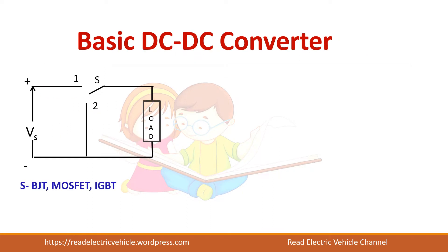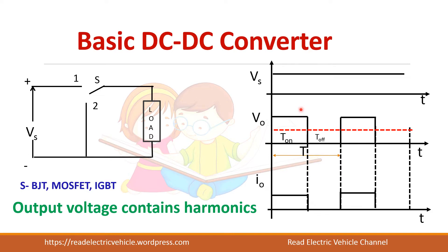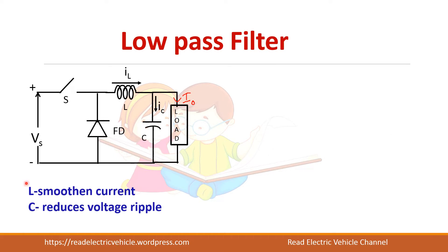This is a basic DC-DC converter. When this switch is connected to position 1, output voltage equals supply voltage, and when connected to position 2, output voltage is 0. In this case the ripple is very high — this point is Vs and this is 0 — so you cannot give this type of voltage to a practical circuit. You need to use some filters so that the ripple will be reduced. Moreover, in case of R load, I0 equals V0 by R, and the current ripple is also high. So normally we use an LC filter to smoothen out the current ripple as well as voltage ripple.